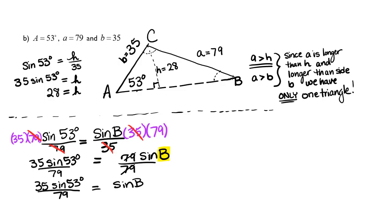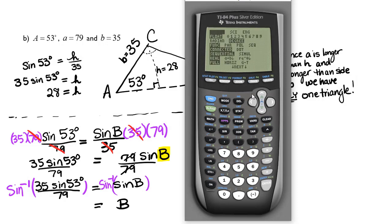Now remember if I want to find an angle I take the inverse of both sides. First I make sure my calculator is in degrees, then I take sine inverse of 35 times sine of 53 degrees, making sure that this is all in the numerator by putting another set of parentheses, divided by 79. And I get B is equal to 20.72. I'm just going to round that up to 21 degrees.